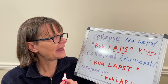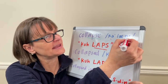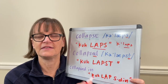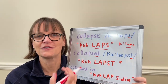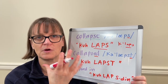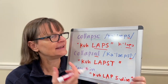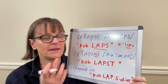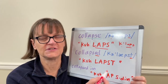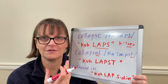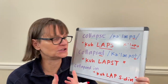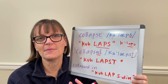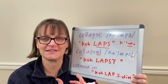When we get to collapsed, because collapse ends with the S sound, when we add the letters ED, they simply say the T sound. This is true for all past tense verbs when we're putting the letters ED on — if it ends with a voiceless sound like S, F, or P, we're going to make the letters ED just say T because we can't turn the voice on. That's just the rule and the pattern.